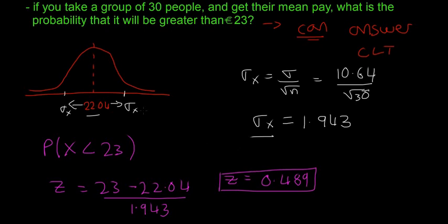Actually, we're not looking for less than, we're looking for greater than. The question asks: what is the probability that their mean pay will be greater than 23 euro? So z equals 0.489.